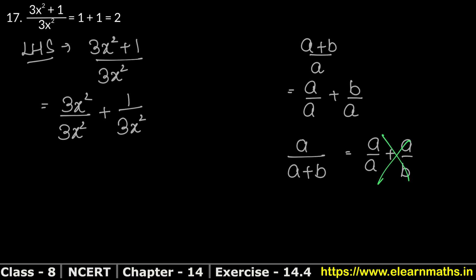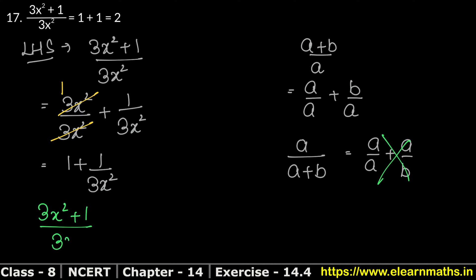As I showed, this is in the form a upon a plus b upon a. Now these same values — 3x squared upon 3x squared — cancel and give 1. So we get 1 plus 1 upon 3x squared. This means 3x squared plus 1 upon 3x squared equals 1 plus 1 upon 3x squared. This is our answer.